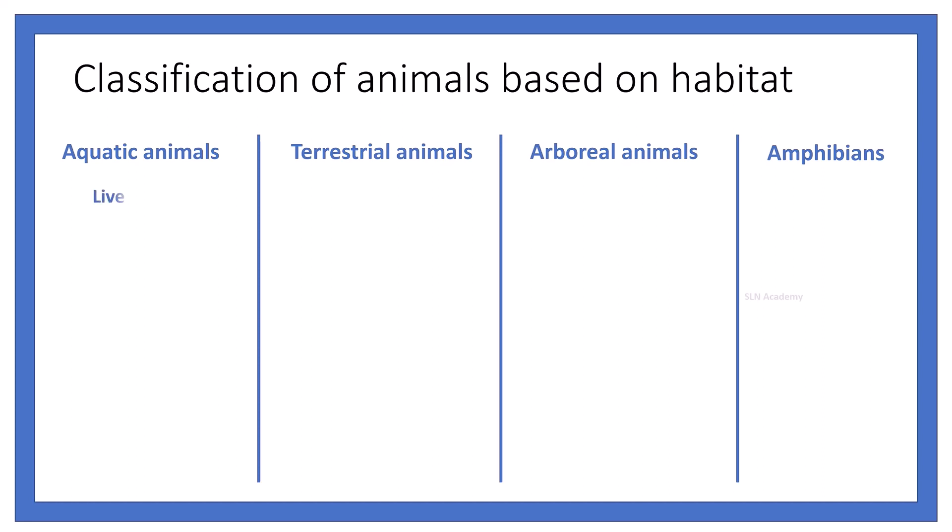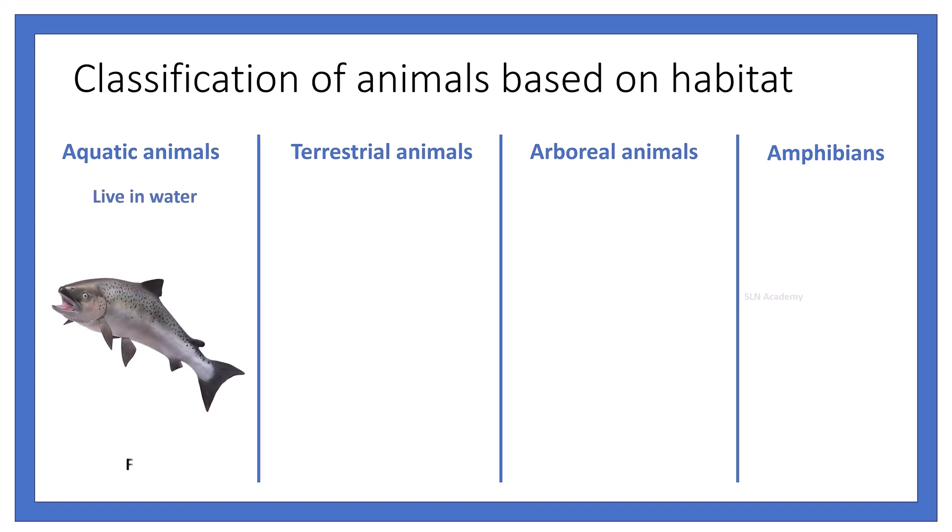Animals that live in water are called aquatic animals. Examples: fishes, turtles, and seahorses, etc.